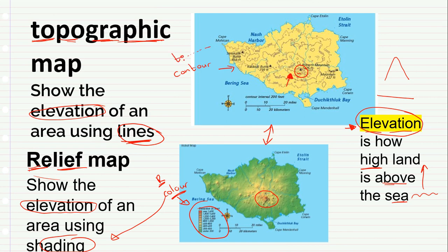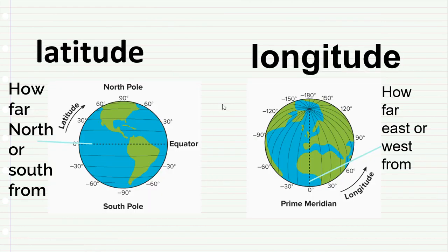Topographic is a longer word starting with T and uses lines. Now let's look at latitude and longitude. When we want to find a place on earth, we are usually given two numbers: one tells us how far something is from the equator, and the other tells us how far it is from the prime meridian.